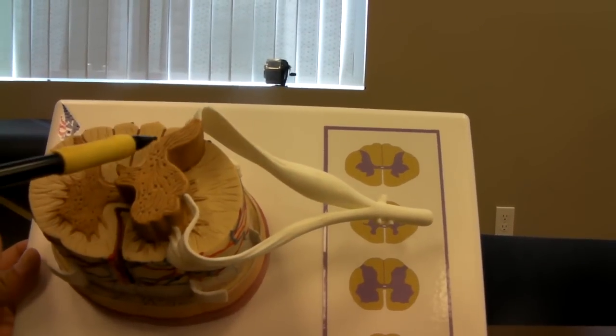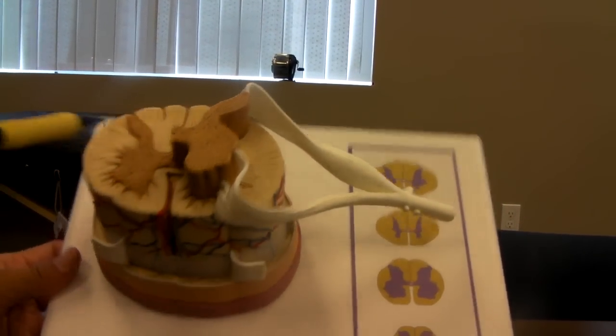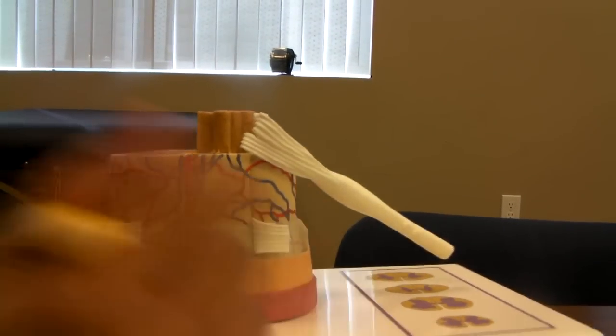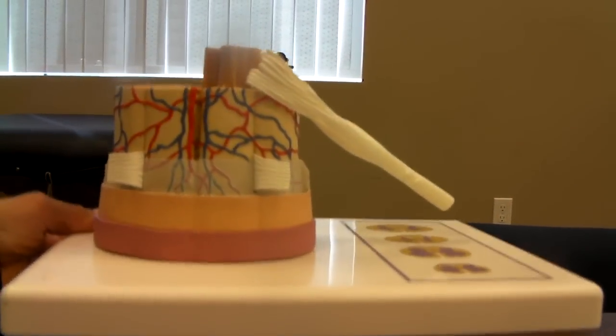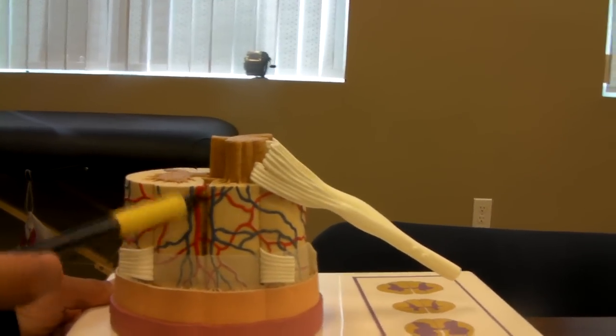Right here is the white matter and gray matter of the spinal cord, and then right here we have the ventral median fissure.